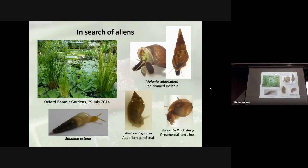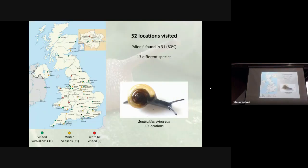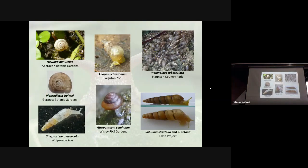One of my particular interests is looking for alien species — introductions that only live in hothouses. This started when I visited Oxford Botanic Gardens and found some snails I didn't recognise. I took them home and identified them as species which don't occur in the wild. I've now been to over 50 locations around Britain, looking in every single open-to-the-public glasshouse setup I can find. I've got these alien species in 31 of the 52 sites. Some of these occur in huge abundance — at the Eden Project, for instance, they occur in their tens of thousands. If climate warms enough and our winters become mild enough, these things may get out into the wild, and we have no idea what they will do.